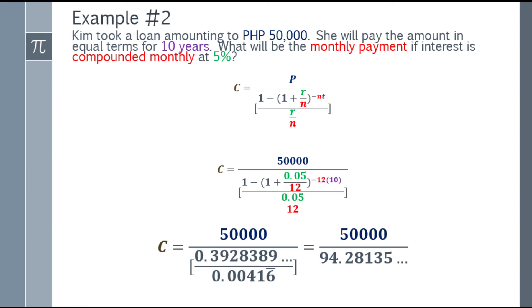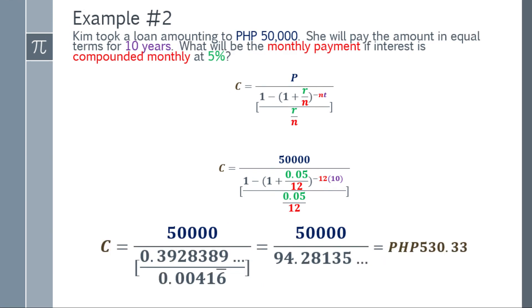And lastly, 50,000 divided by 94.28135 and so on gives the answer. Going back to the question: Kim took a loan of 50,000 pesos and will pay in equal terms for 10 years. The monthly payment compounded monthly at 5% is 530.33 pesos.